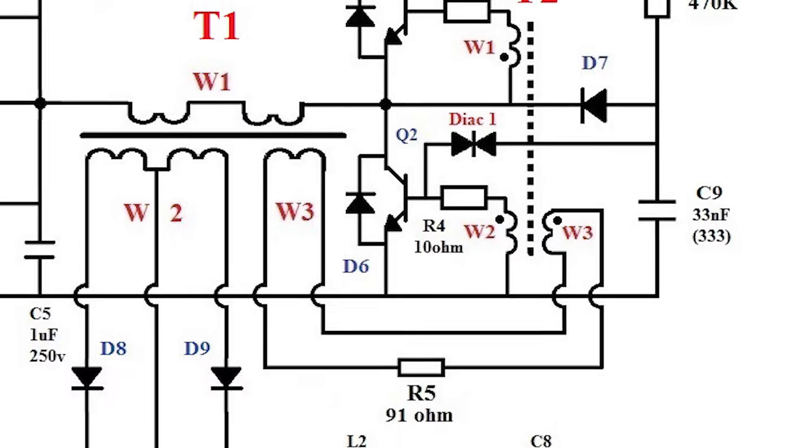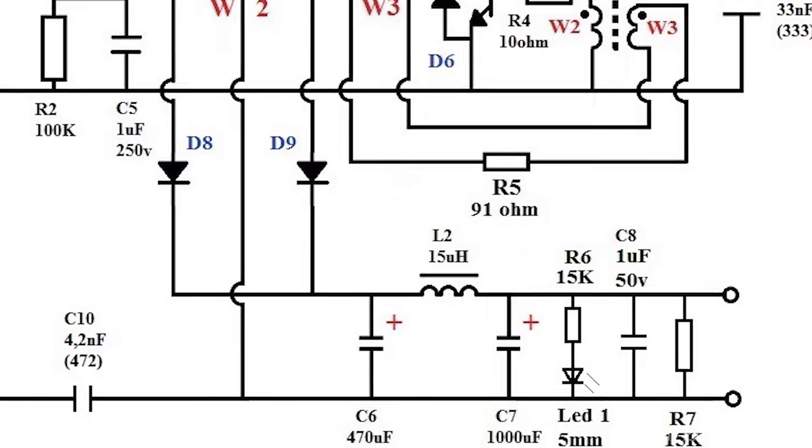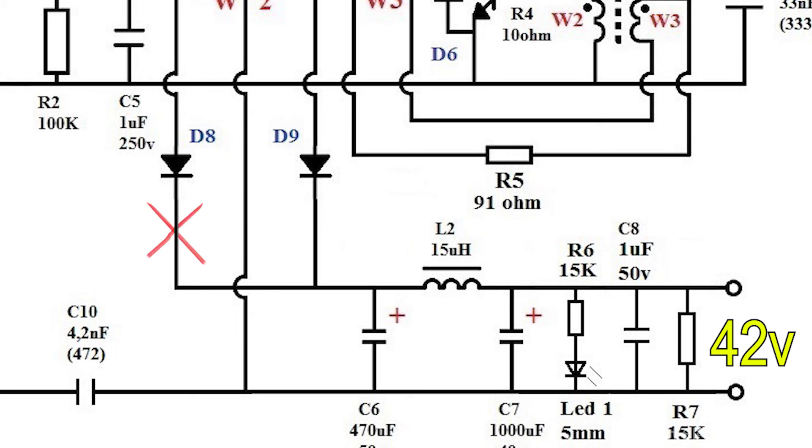You can also check the voltage at each half cycle of the secondary winding. To do this, you need to turn off one of the diodes and then check the output voltage. Then connect the diode back and disconnect the second diode. And again measure the voltage.